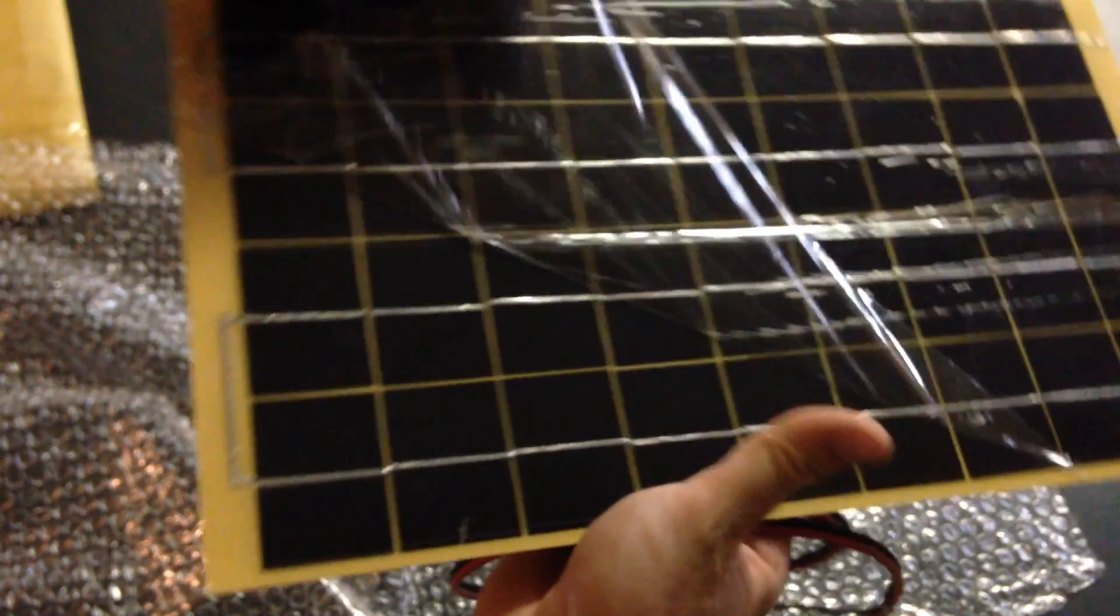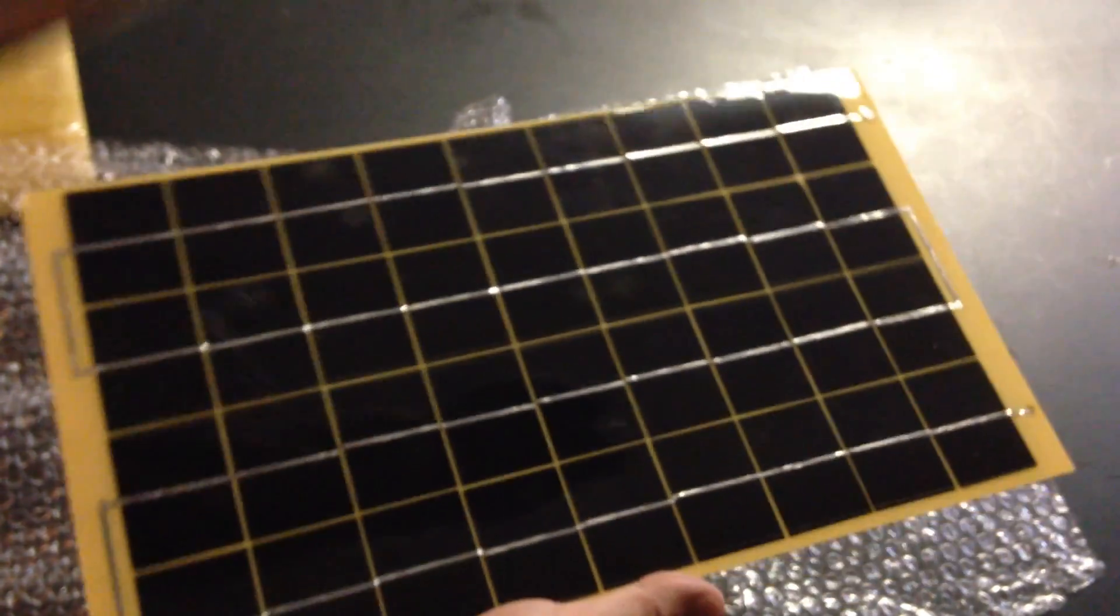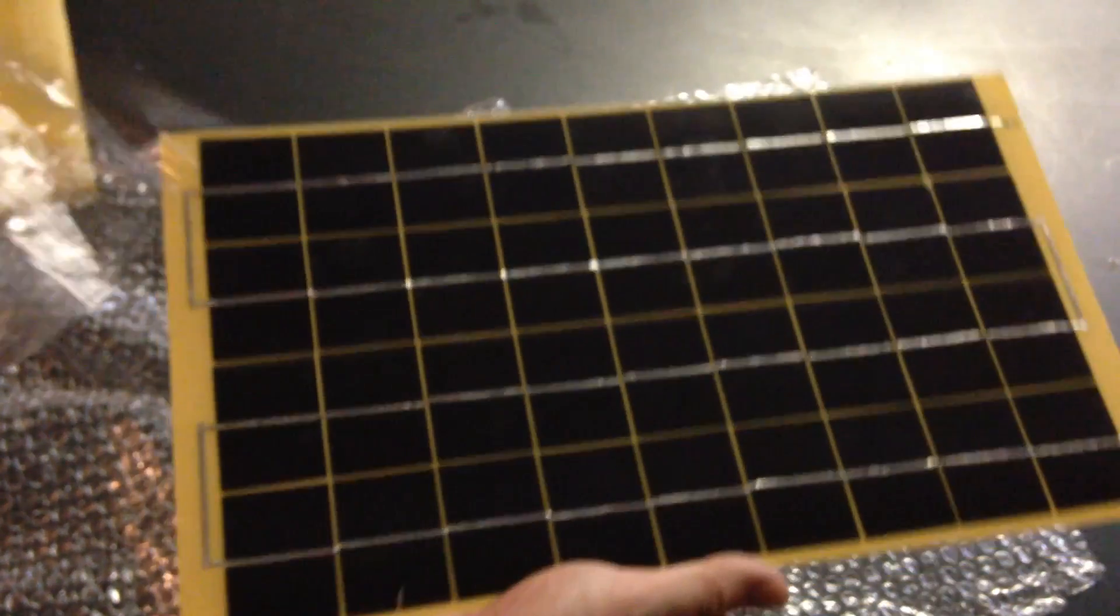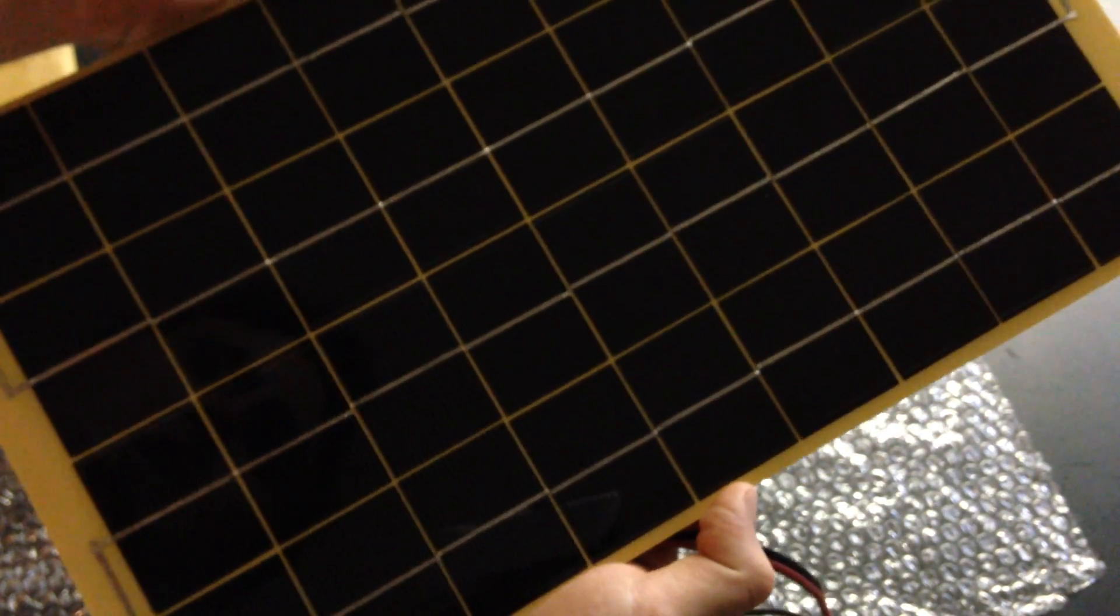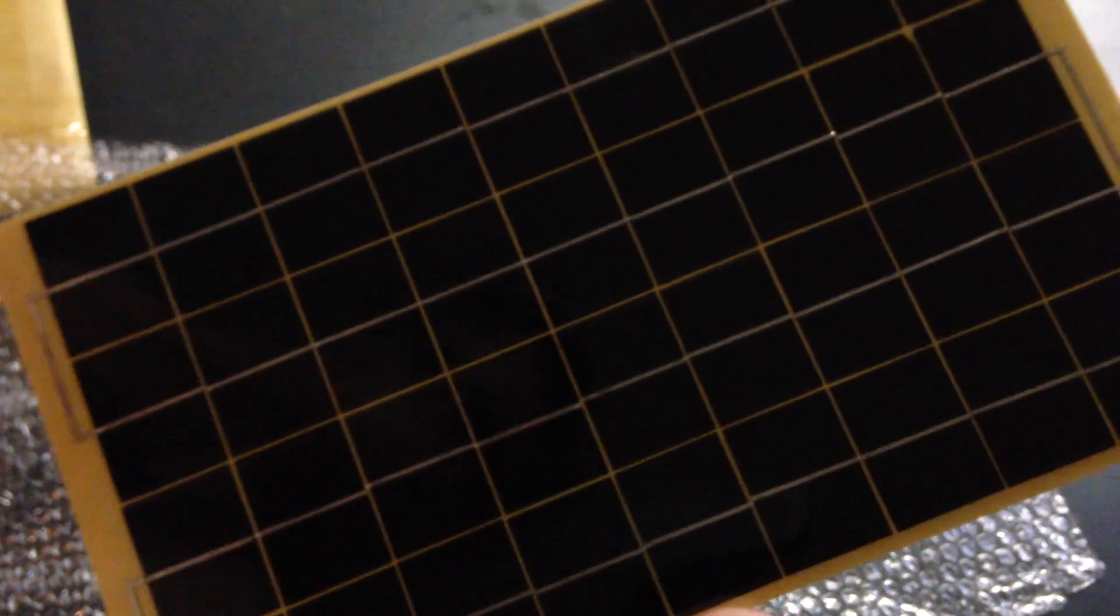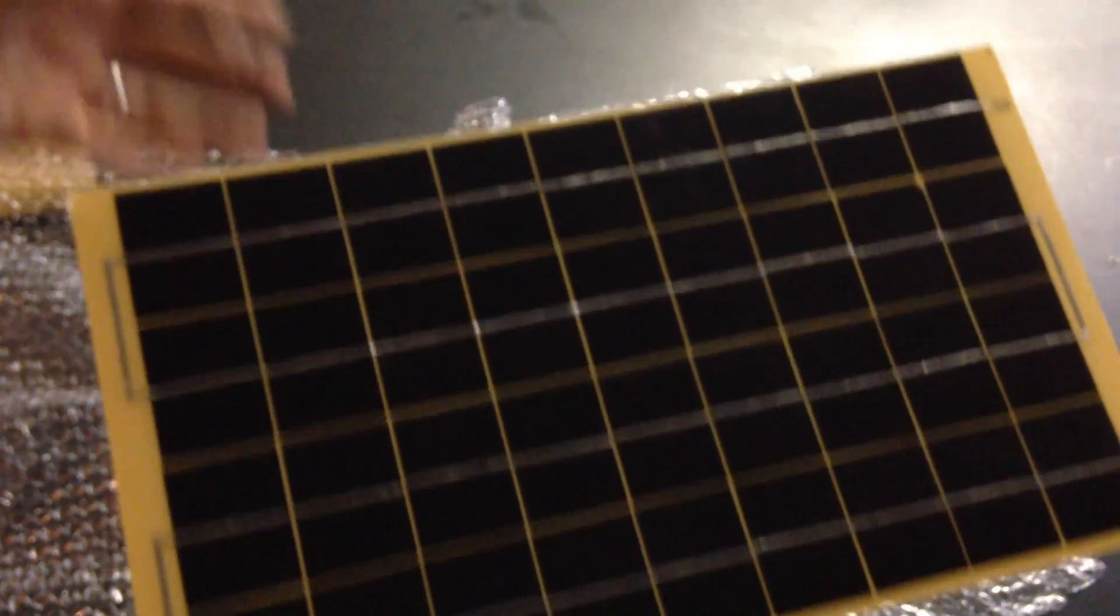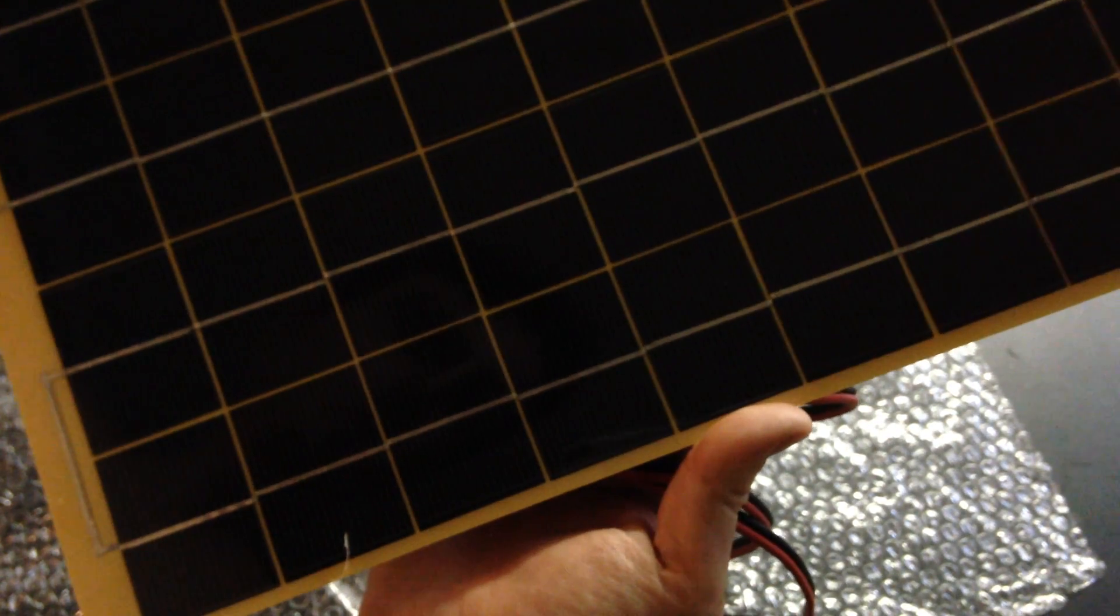I'm just going to take this off—that's the plastic that protects it. Obviously you can't leave this on; it might melt onto it and damage it. Something you shouldn't do with these is actually touch the solar panel itself. I don't think you'll damage it, but definitely you won't do any good to it.